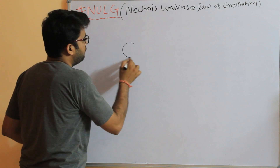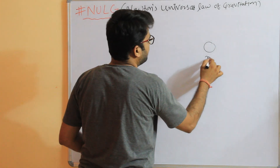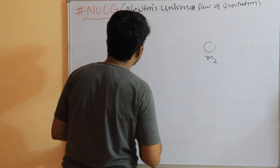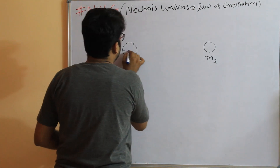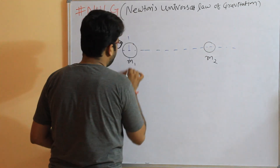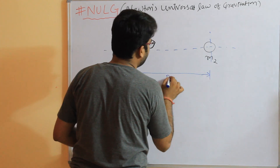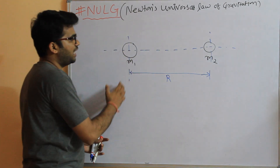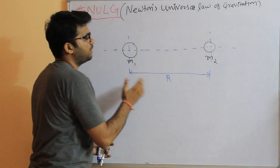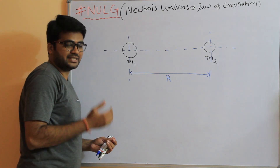It states that if we have two masses M1 and M2, and the distance between these two masses is given by capital R — that is, the distance between the centers of these two masses is capital R. Now what this Universal Law of Gravitation states is that...